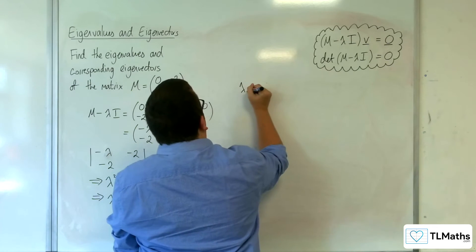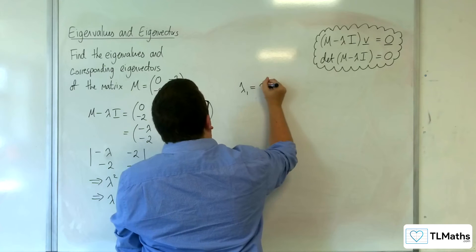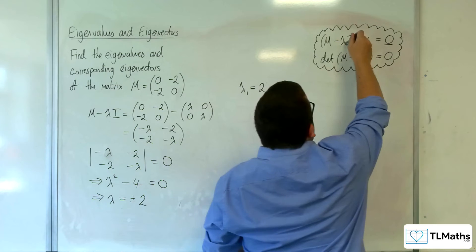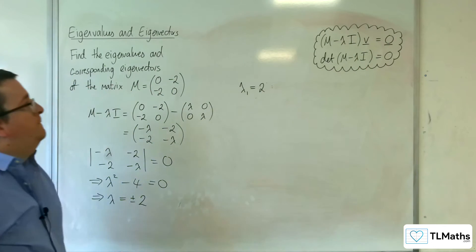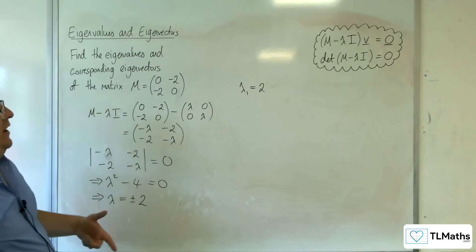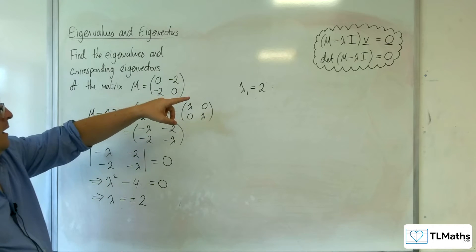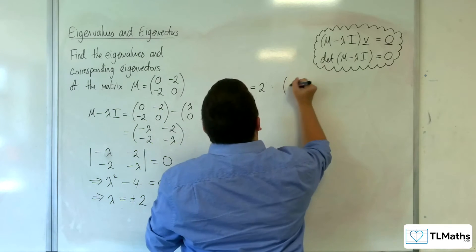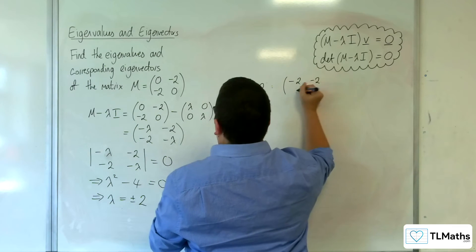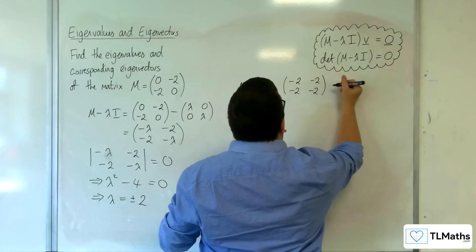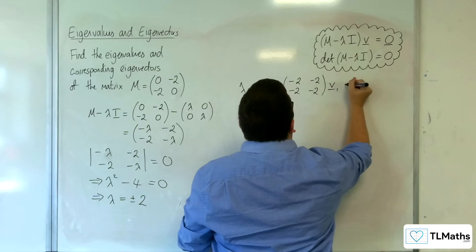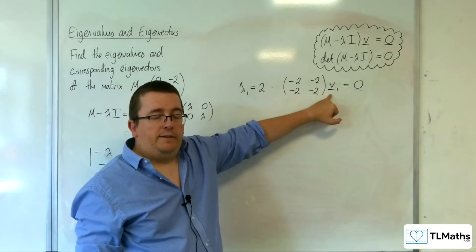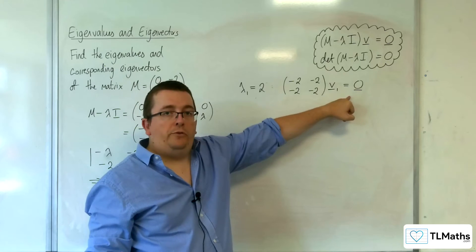For the first eigenvalue, let's call that lambda 1 equal to 2. If we substitute it into this equation, we have M take away lambda 1 times I, where lambda 1 is 2, giving the matrix (−2, −2, −2, −2) times our first eigenvector v1 equal to the zero vector.